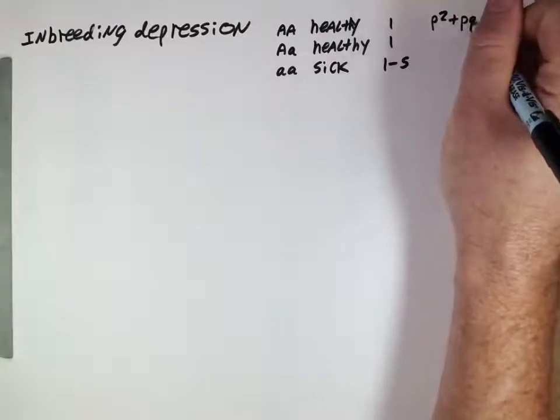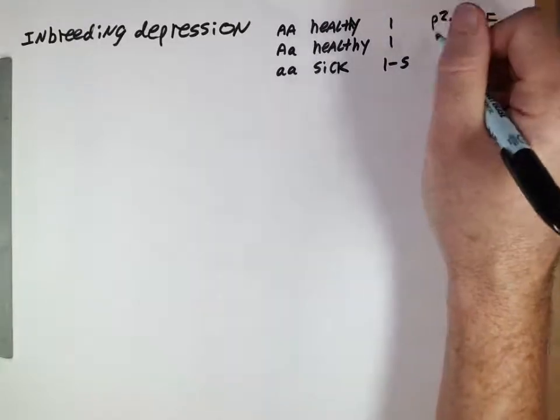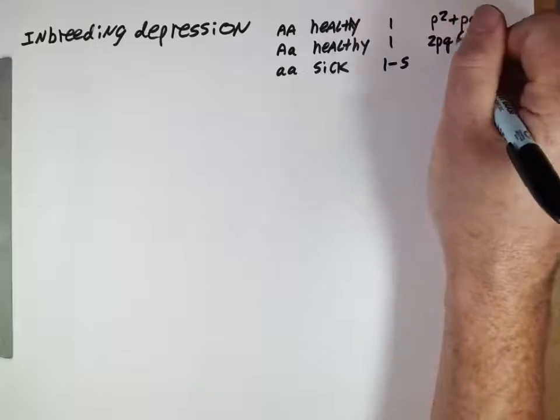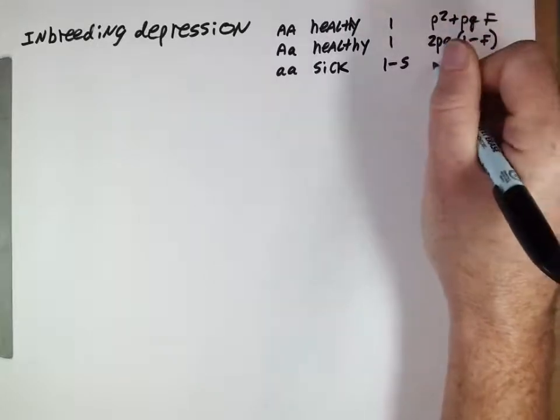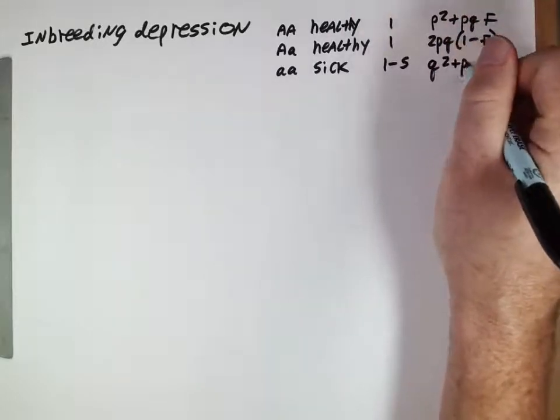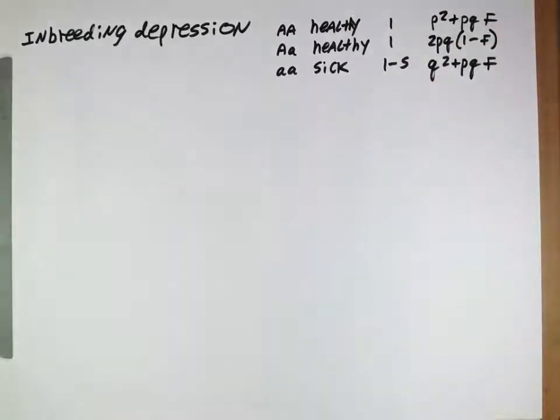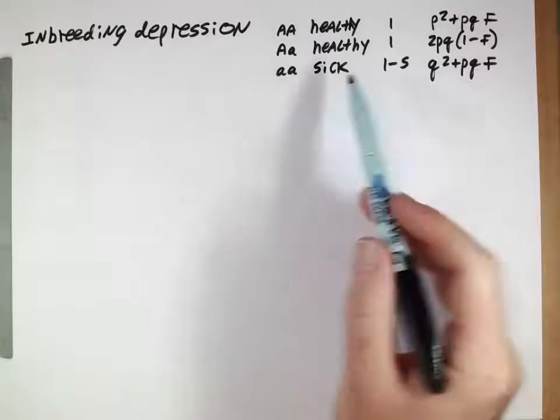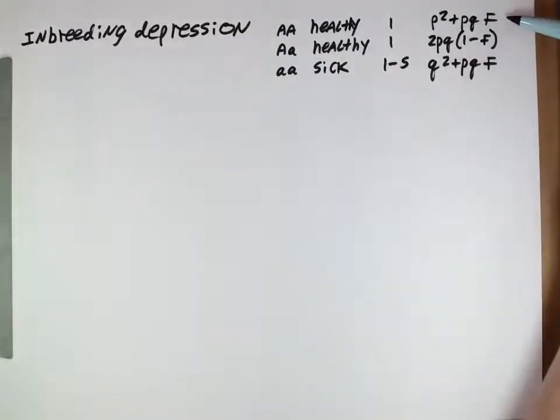When we know the frequencies are given by this, by this, and by this, we're looking at a population that has some degree of inbreeding with a deleterious recessive allele. We know from our previous work that this will be the frequencies of those genotypes.